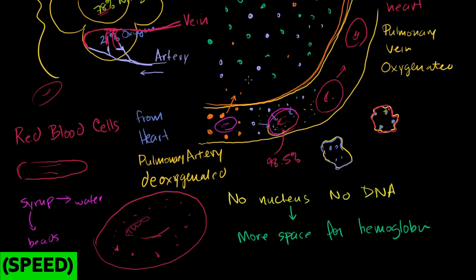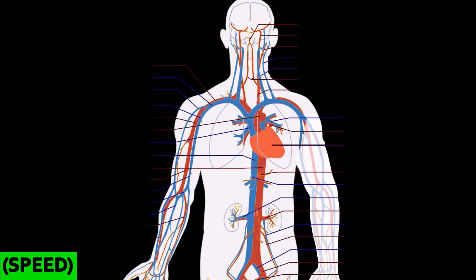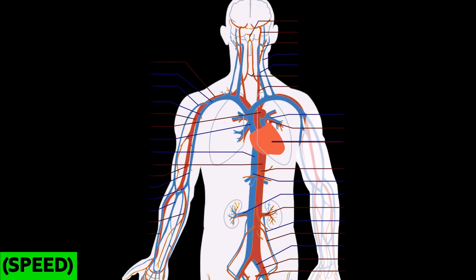I've been zoomed in on the alveolus and the pulmonary capillaries. Let's zoom out a lot to understand how blood is flowing and get a better understanding of pulmonary arteries and veins relative to the other arteries and veins in the body. Here I copied a diagram of the human circulatory system from Wikipedia. In the back you can see the lungs, and the heart is sitting right in the middle.